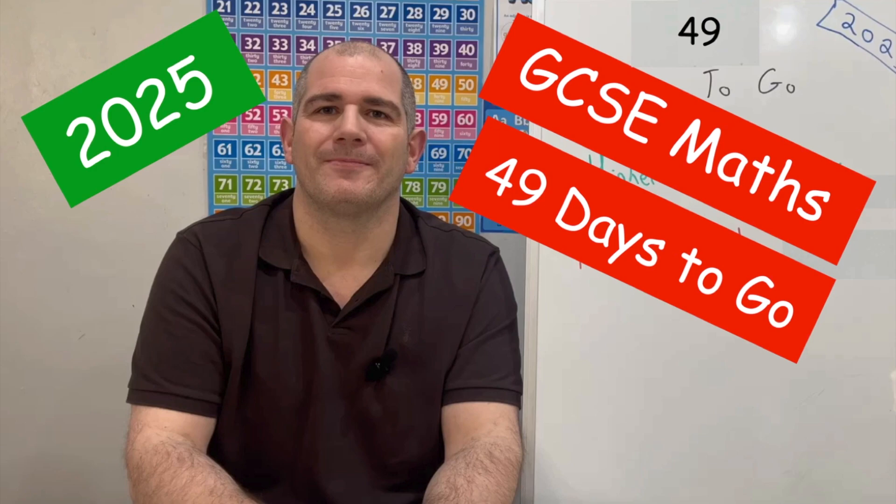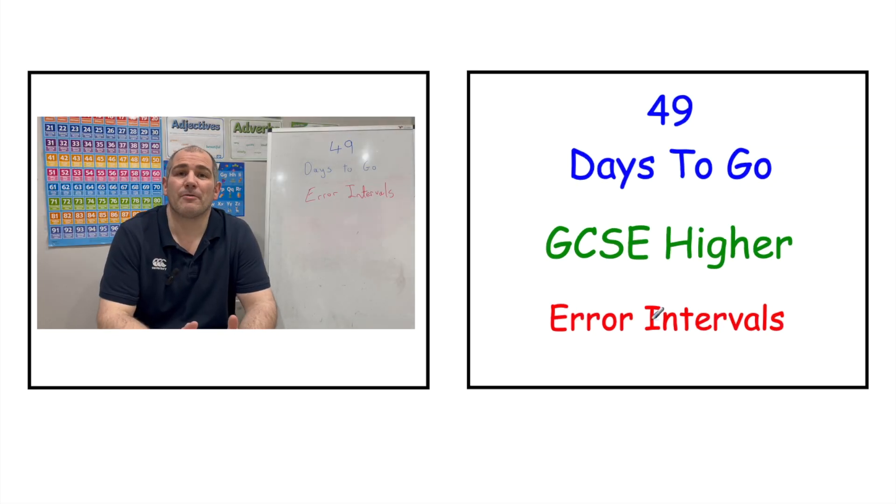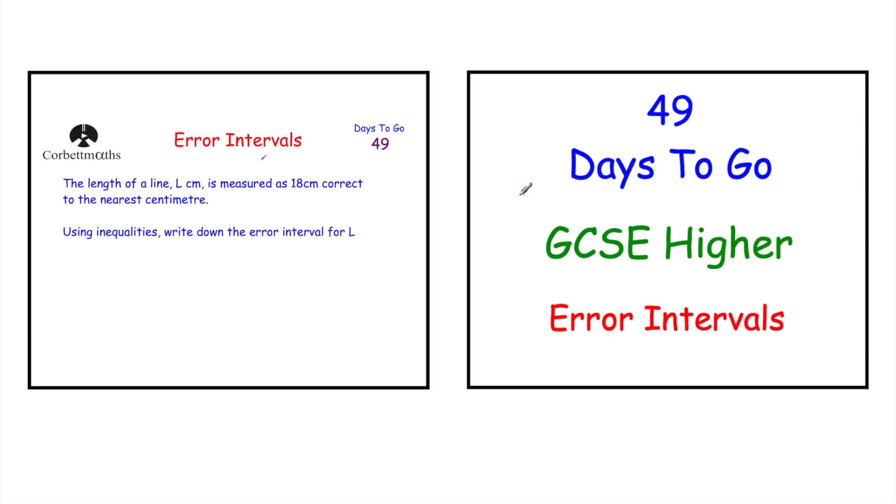If you're preparing for GCSE Higher Maths today, your topic is error intervals. To access your revision video, there's a link in the top right-hand corner, or you can click the link in the description below, or wait for the two icons at the end of the video. You can also scan the QR code if you have the 100 Days to Go Revision book, or go through the website: GCSE Revision, 100 Days to Go, then Higher, and scroll down to 49 Days to Go.